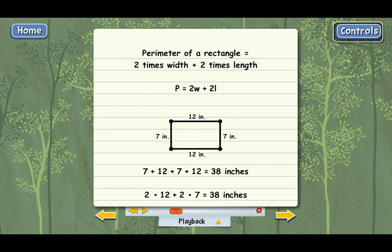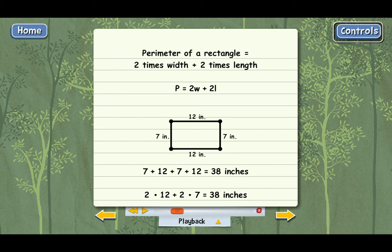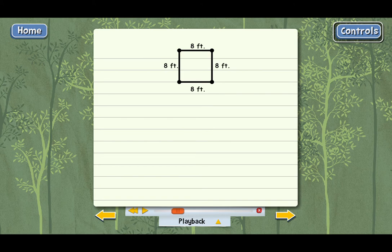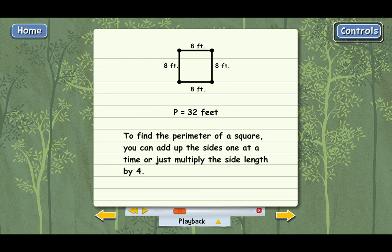What about the perimeters of other figures? Well, the perimeter of a square is really easy because all four sides of a square are equal. What's the perimeter of this square? Good. With a square, you can add up the sides one at a time, or just multiply the side length by 4. 4 times 8 is 32. Here's the fast way to calculate the perimeter of a square.